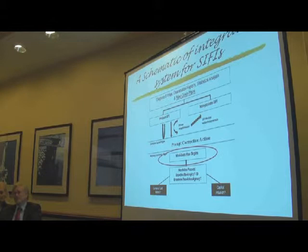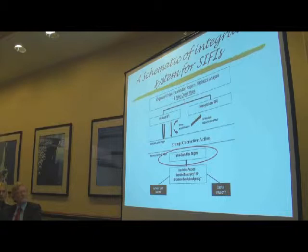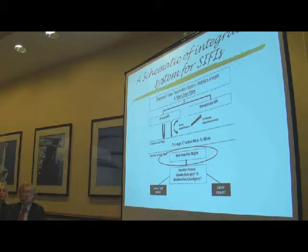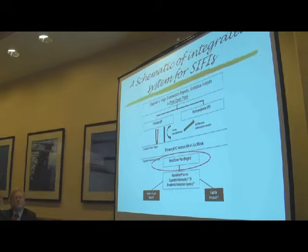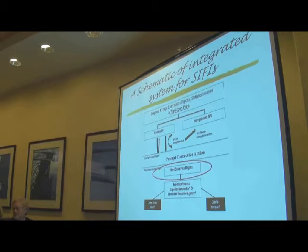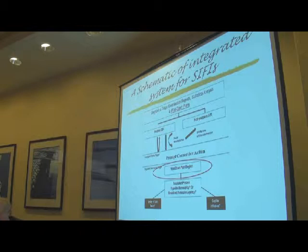I'd like to start with my view of what an integrated financial system that can deal with systemically important firms looks like. It would include both supervision and capital regulation, and most importantly the wind-down function or resolution function, because you have to do the end game before you can ever be sure of having market discipline in the system. Unless you have a credible way of winding down even the most complicated firm in your system, you're really not going to have much market discipline taking place.